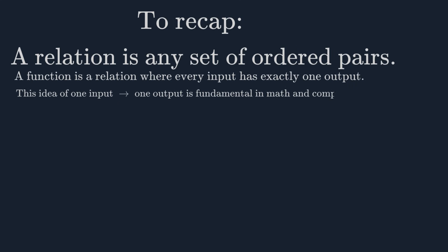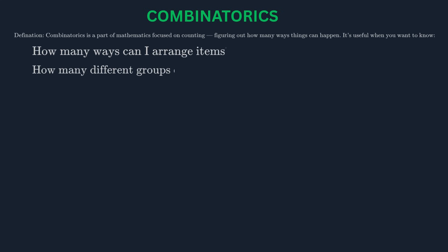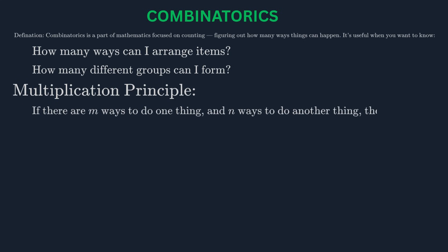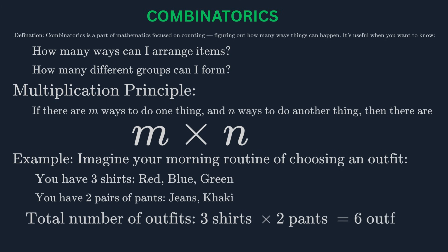Our fourth topic is combinatorics. This is the branch of mathematics that deals with counting. It answers questions like: How many ways can I arrange these items? Or how many different groups can I form? Let's start with the most basic principle: the multiplication principle. If there are m ways to do one thing and n ways to do another thing, then there are m × n ways to do both. Imagine you're getting dressed. You have three shirts and two pairs of pants. How many different outfits can you make? Using the multiplication principle, you multiply the number of choices for shirts by the number of choices for pants: 3 × 2 = 6. You have six possible outfits.